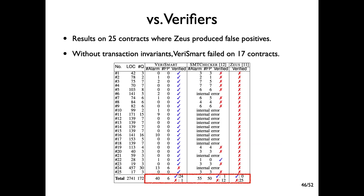On 25 contracts where Zeus produced false positives, VarySmart produced false positives on only one contract, and SMT Checker produced false positives on 12 contracts. In this experiment, we again observed the importance of leveraging transaction invariants — specifically, without transaction invariants, VarySmart produced false positives on 17 contracts.